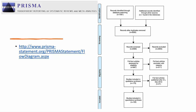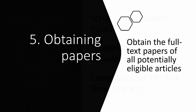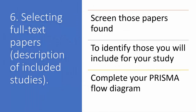Step five is where you obtain electronically, wherever possible, the full-text papers of all potentially eligible articles — note that I am not suggesting you start printing any of these out unnecessarily as you are unlikely to keep them all. Next, step six involves selecting your final full-text papers, where you might use a screening tool to assist you in deciding on only those full-text papers that will be included in your review.